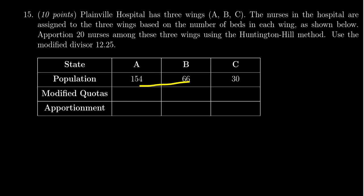So we're going to divide each of the three states' populations by the modified divisor 12.25. 154 divided by 12.25 gives us 12.5714, 66 divided by 12.25 is 5.38776, and then finally 30 divided by 12.25 gives us 2.44898.